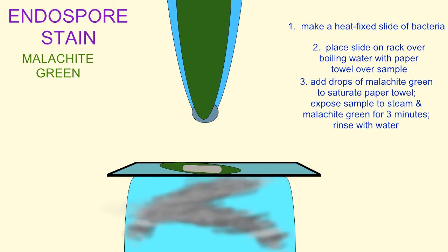Over the course of three minutes or so, the steam allows the malachite green stain to enter the spores.